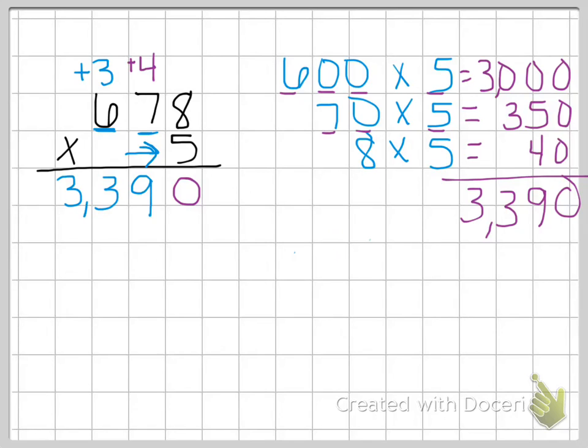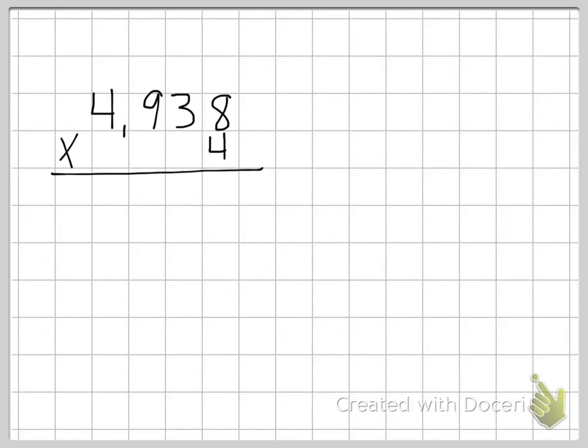So you can work these out either way. We're going to do some more examples. It's just completely up to you with whatever way you feel more comfortable with. This one is a four digit number. 4,938 times 4. So I'm going to show you what we would call the more traditional way first.